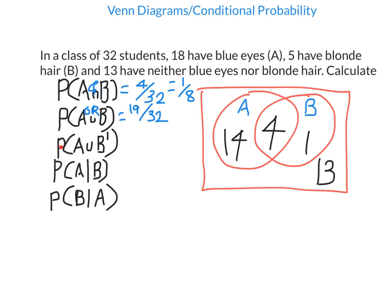P(A ∪ B') means the probability of A or not B — blue eyes or not blonde hair. Going through each region: the 14 (blue eyes only) are included because they have blue eyes; the 4 in the middle are included because they have blue eyes; the 13 outside are included because they don't have blonde hair. The only person excluded is the 1 with blonde hair only — they're not in A and not in 'not B'. So we include 14 + 4 + 13 = 31 out of 32.